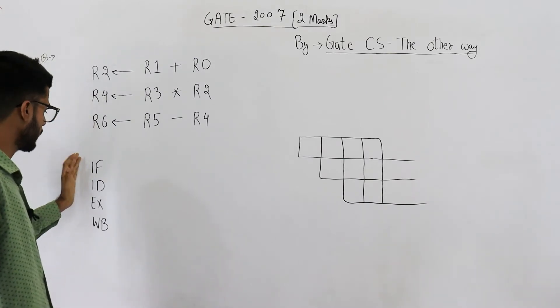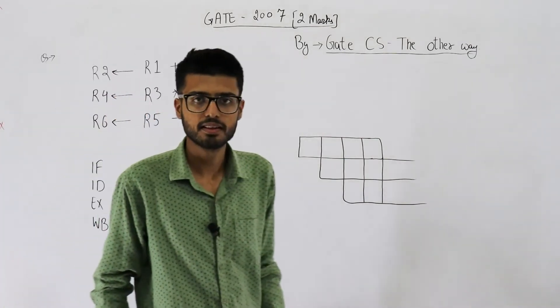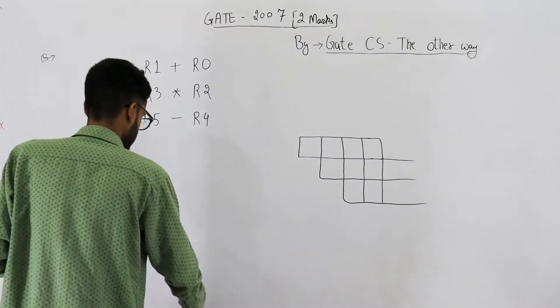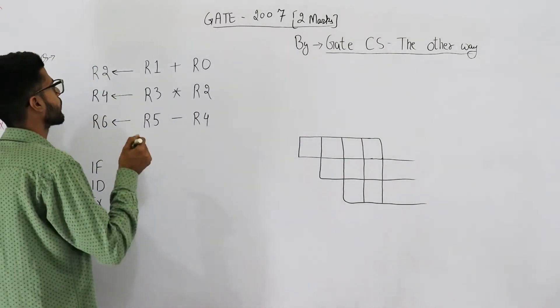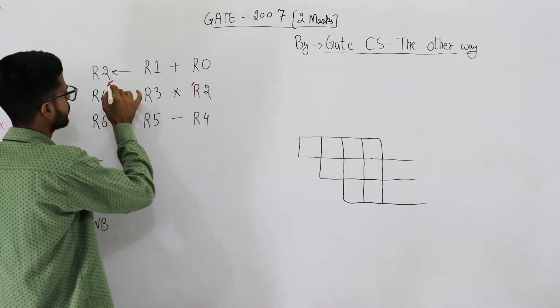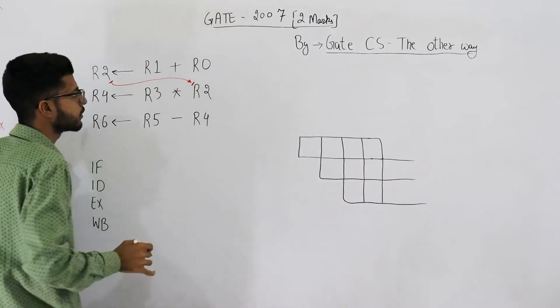What they're saying is if you use operand forwarding to execute this code on a pipelined processor with these four stages, how many clock cycles are required? So first of all let's analyze the dependencies.